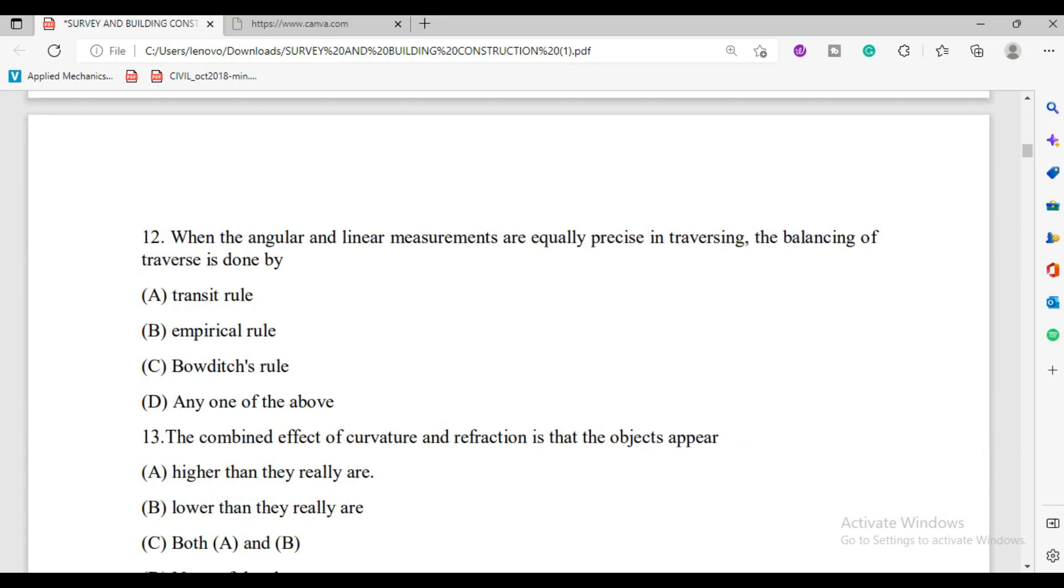When the angular measurement and linear measurements are equally precise in traversing, the balancing of traverse is known as empirical rule, transit rule, or Bowditch's rule. If angular measurement is more precise, the answer is transit rule. If angular and linear both are equally precise, the answer is Bowditch's rule. The correct answer for equally precise measurements is option B, Bowditch's rule.